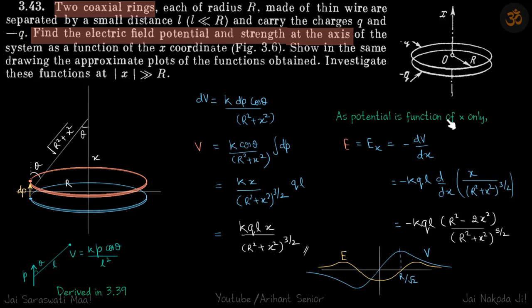Now we have found the potential, so electric field we can calculate by minus dV by dx. We don't have field in any other direction. The potential is only a function of x, so field will also be only in direction of x and this is minus dV by dx.